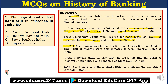In 1921, the three presidency banks — the Bank of Bengal, Bank of Bombay, and Bank of Madras — were amalgamated to form the Imperial Bank of India, which was a private entity. Then in 1955, the Imperial Bank of India was nationalized and renamed the State Bank of India. Thus, the State Bank of India is the oldest bank of India among the banks that exist today.